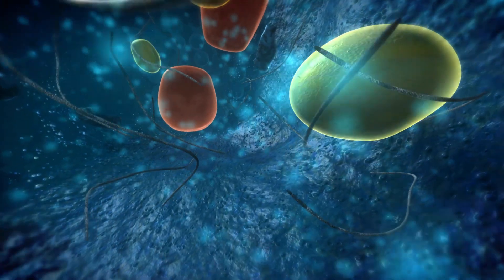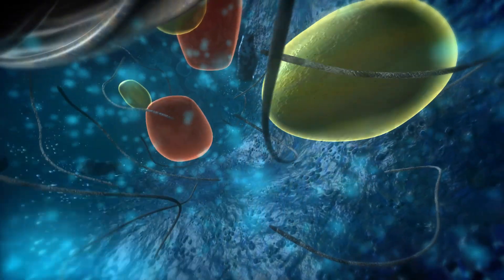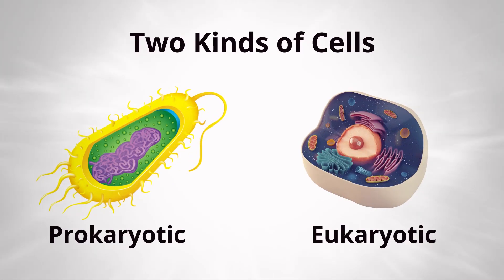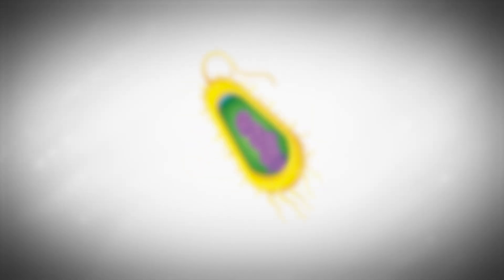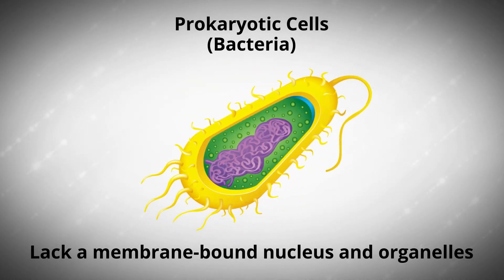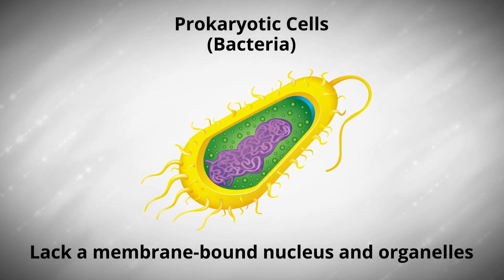Let's take a look at what a cell is made of. There are two main types of cells: prokaryotic cells and eukaryotic cells. Prokaryotic cells, like bacteria, lack a membrane-bound nucleus and organelles.